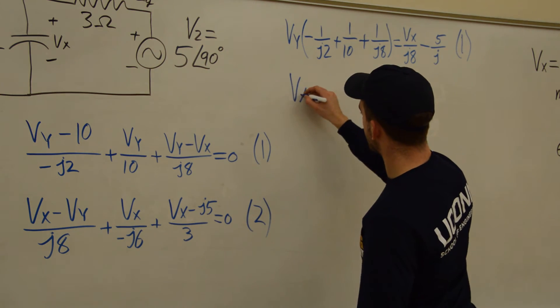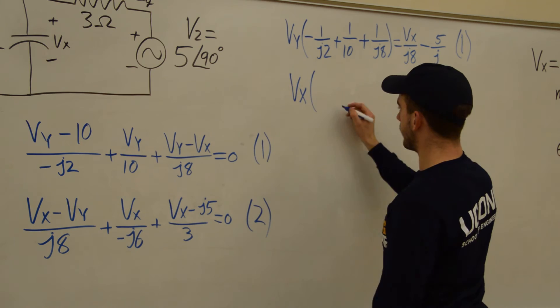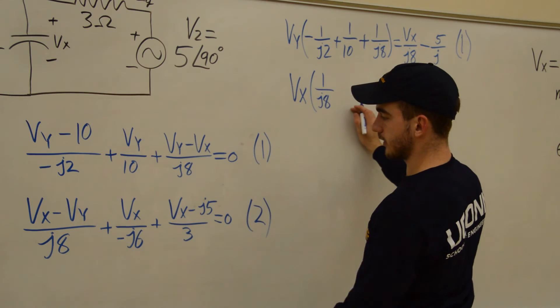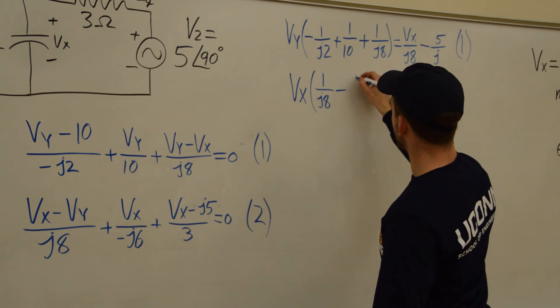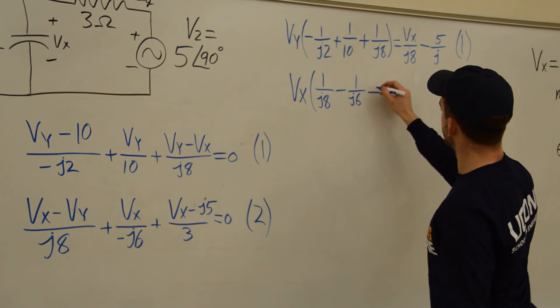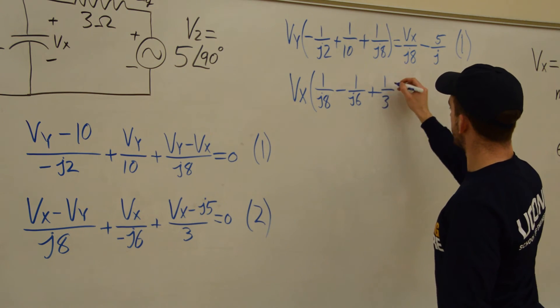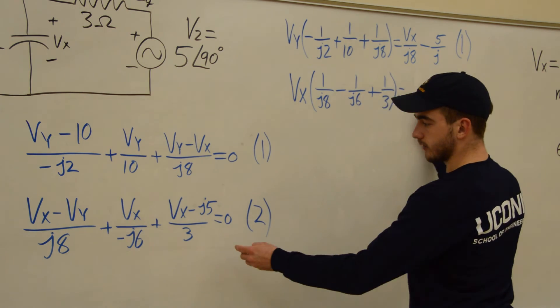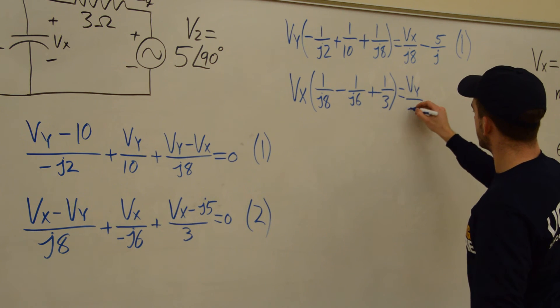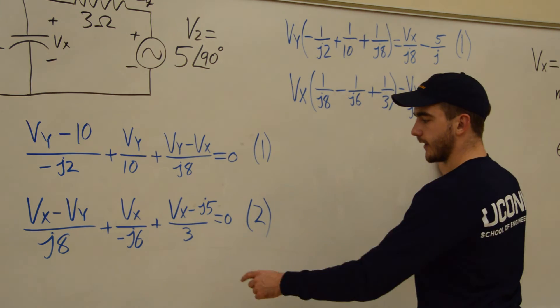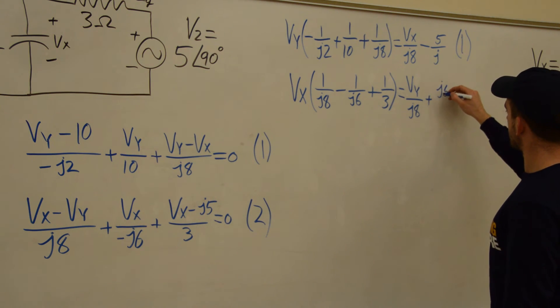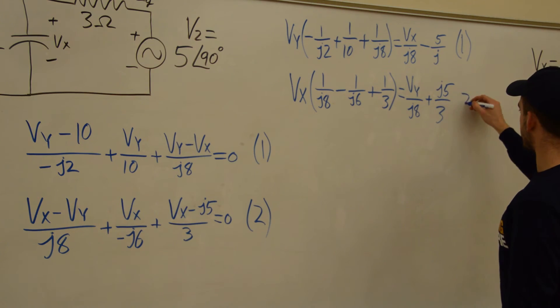And then for this one, we'll have Vx. And we'll have 1 over J8. Plus 1, or minus 1 over J6. Plus 1 over 3. And that all equals, let's see, Vy over J8. And then plus J5 over 3. And that's equation 2.